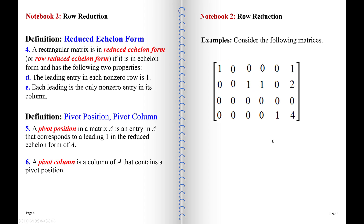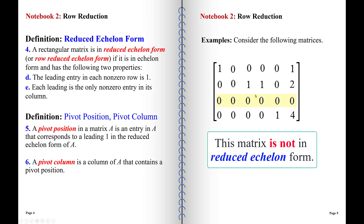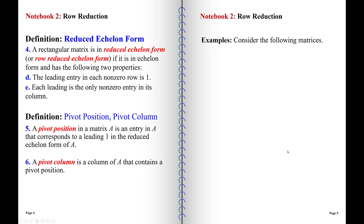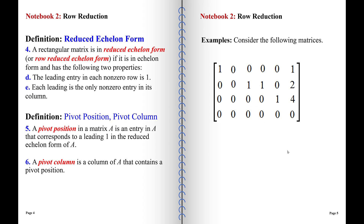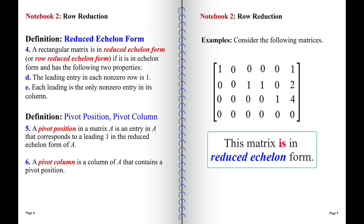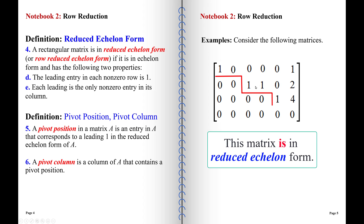The next matrix is not in reduced echelon form — it's not even in echelon form, since the zero rows are not at the bottom. After performing a row interchange, the matrix is in reduced echelon form: the leading entries in the 1-1, 2-3, and 3-5 positions are all ones, and zeros appear above them. Importantly, leading entries don't have to be in adjacent columns — if there's a column of zeros, the leading entry will be in a column further to the right.